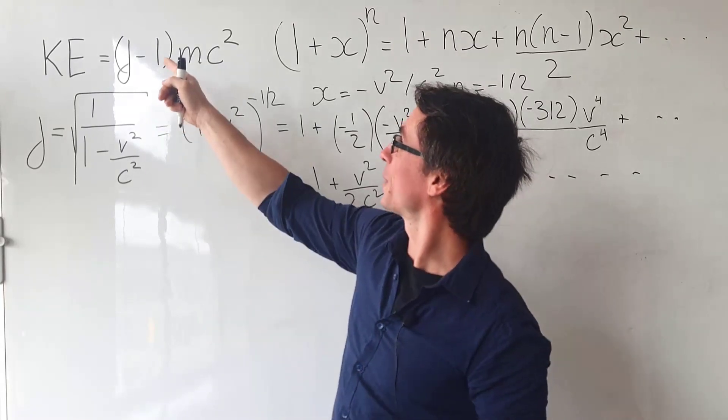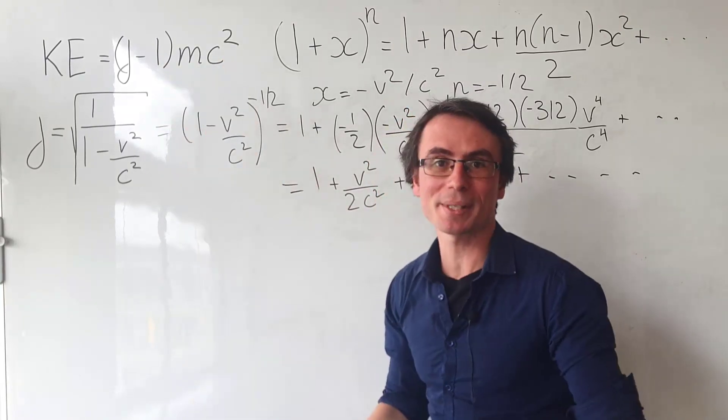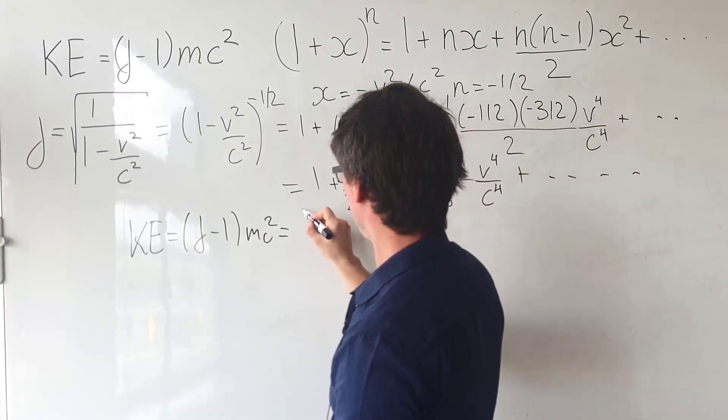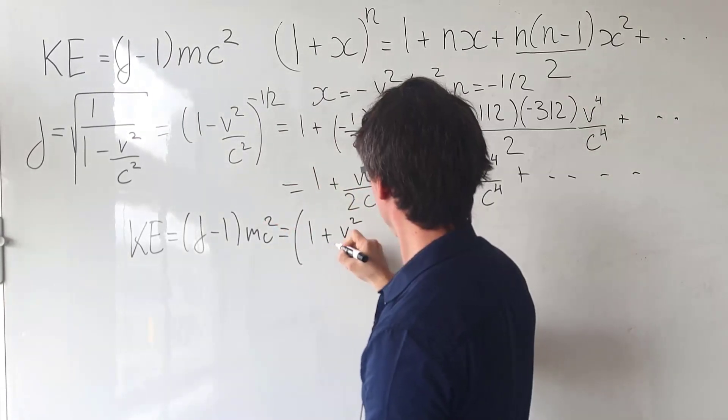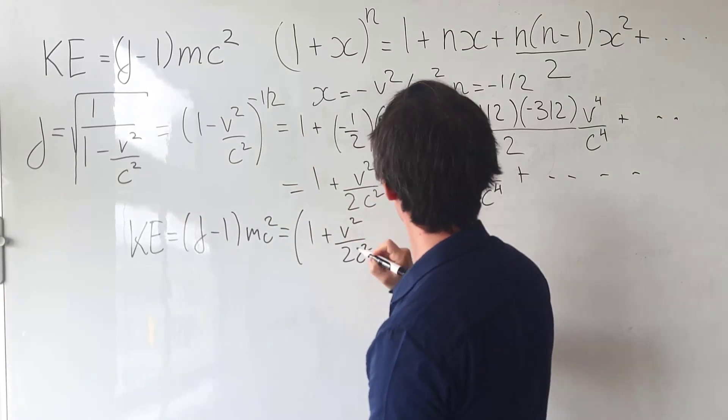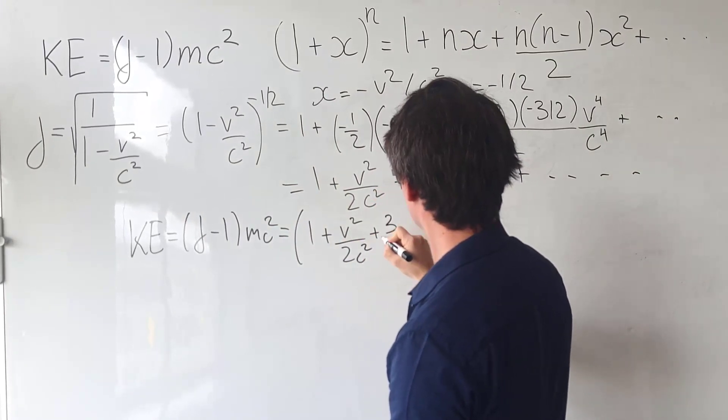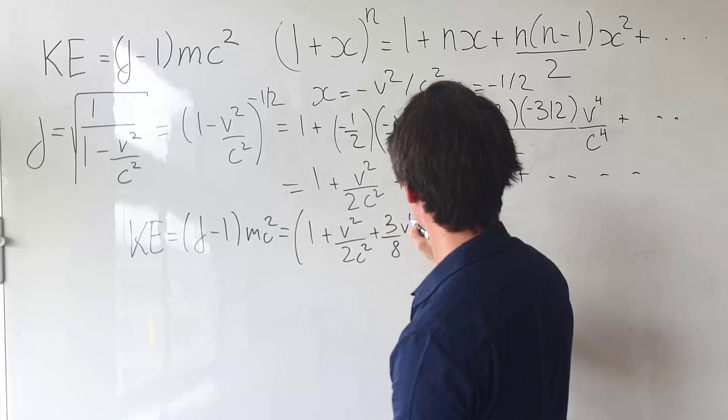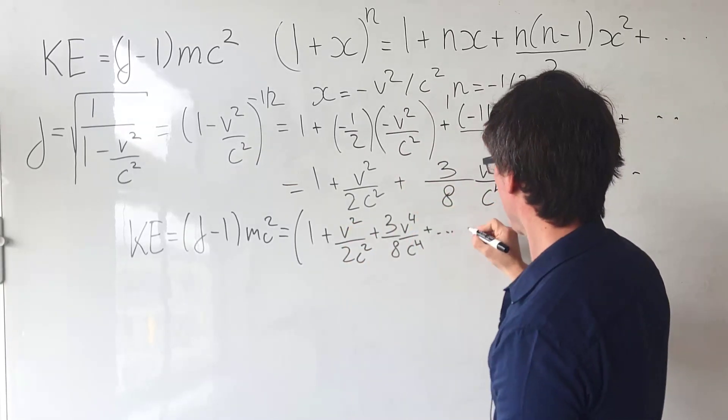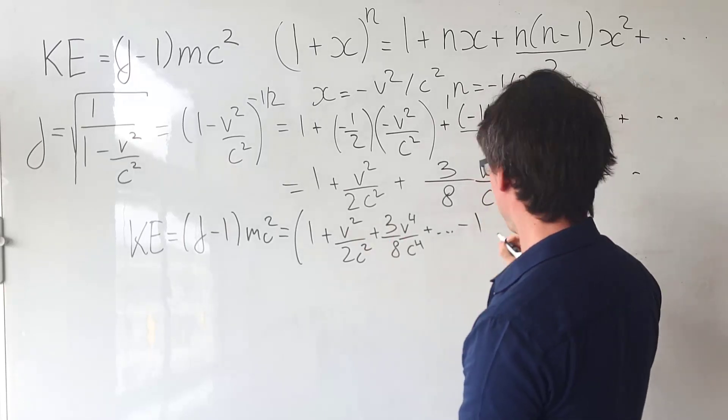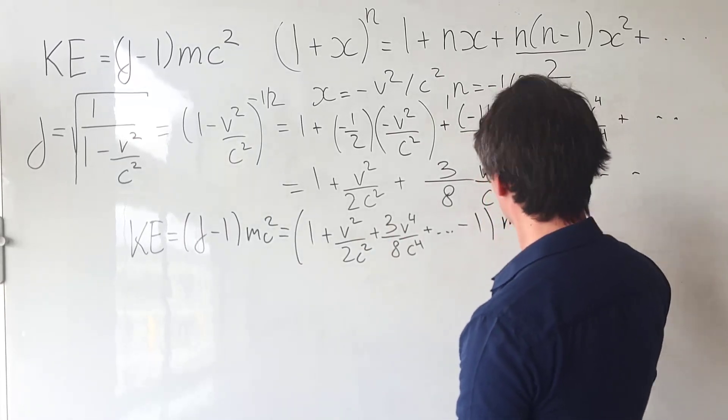The kinetic energy is equal to gamma minus one times mc squared. Rather than gamma, I'm going to write one plus v squared over two c squared plus three eighths v four over c four plus some other factors. Then we're going to take away one mc squared.